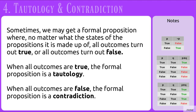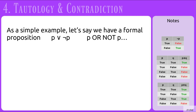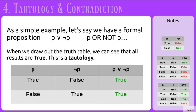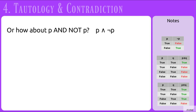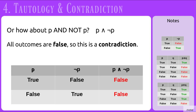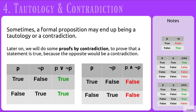Sometimes we may get a formal proposition where, no matter what the states of the propositions it is made up of are, all outcomes turn out true or all outcomes turn out false. When all outcomes are true, the formal proposition is a tautology. When all outcomes are false, it is a contradiction. For example, P OR NOT P is a tautology — all results are true. And P AND NOT P is a contradiction — all outcomes are false. Later on, we will do some proofs by contradiction to prove that a statement is true, because the opposite would be a contradiction.